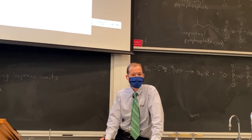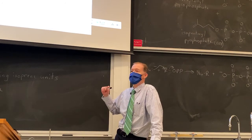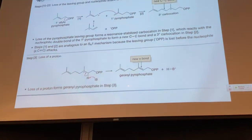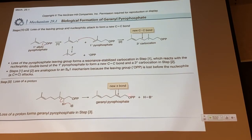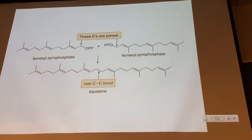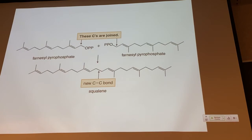To make farnesyl pyrophosphate with 15 carbons, we add five more carbons. Geranyl pyrophosphate acts as the electrophile and goes through the same three steps with another molecule of IPP, giving farnesyl pyrophosphate. Farnesyl pyrophosphate can make sesquiterpenes or diterpenes. It is also the precursor to squalene — formed by dimerizing two molecules of farnesyl pyrophosphate, joining their C1 carbons together.